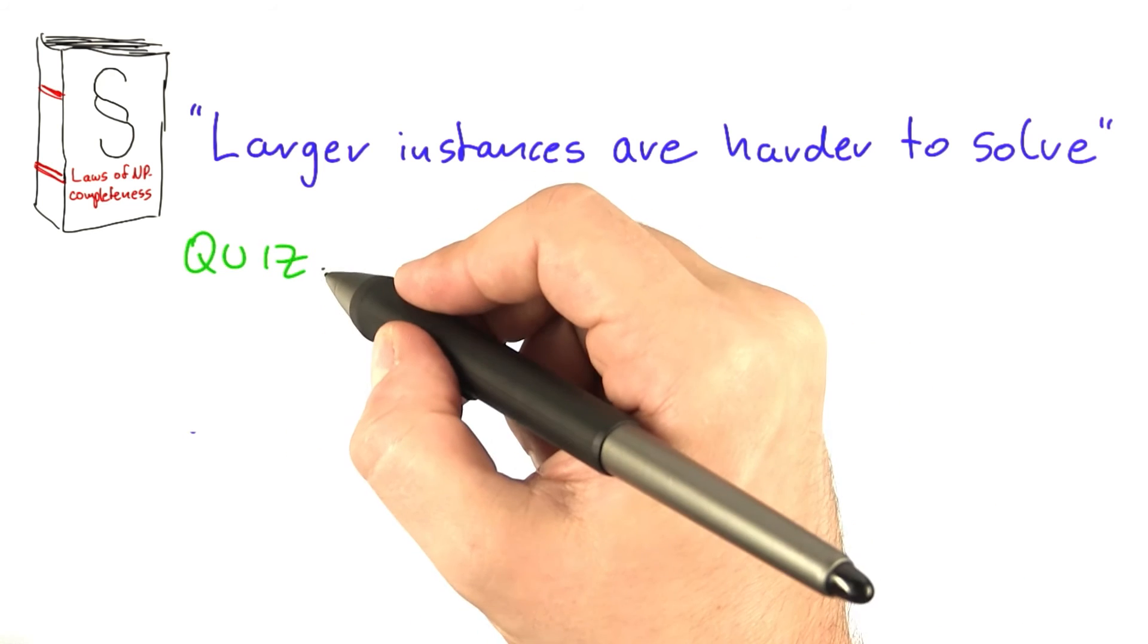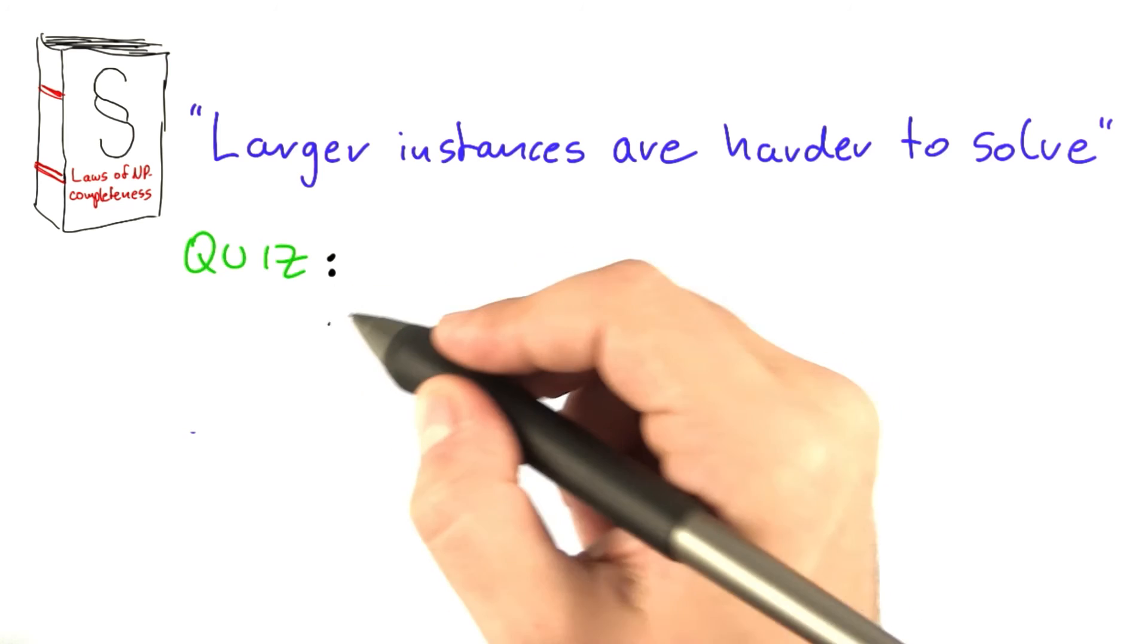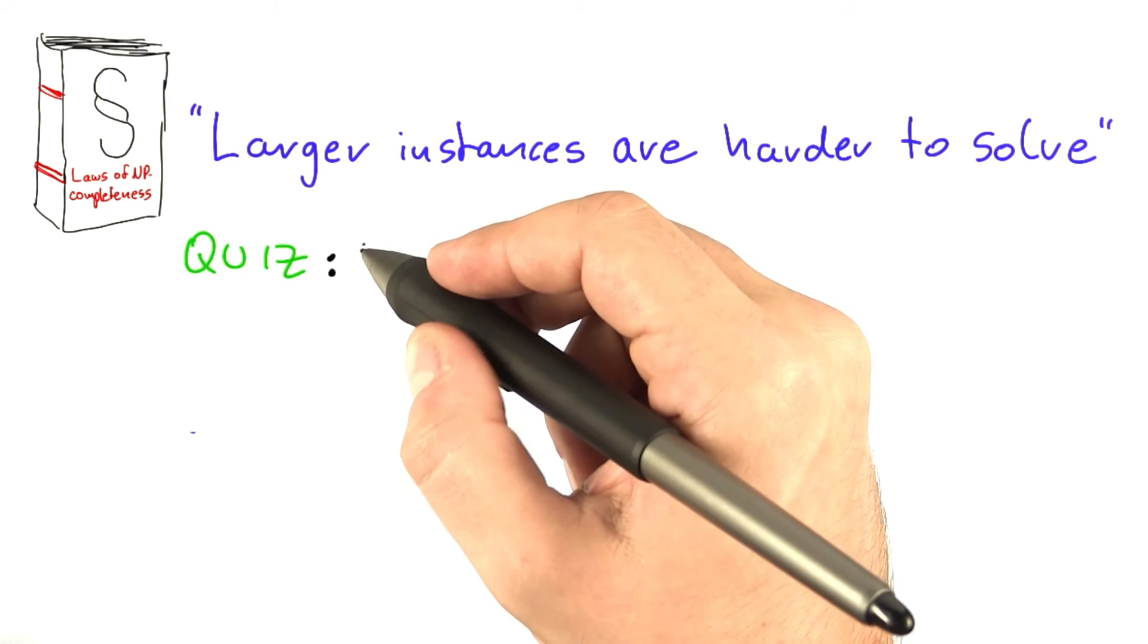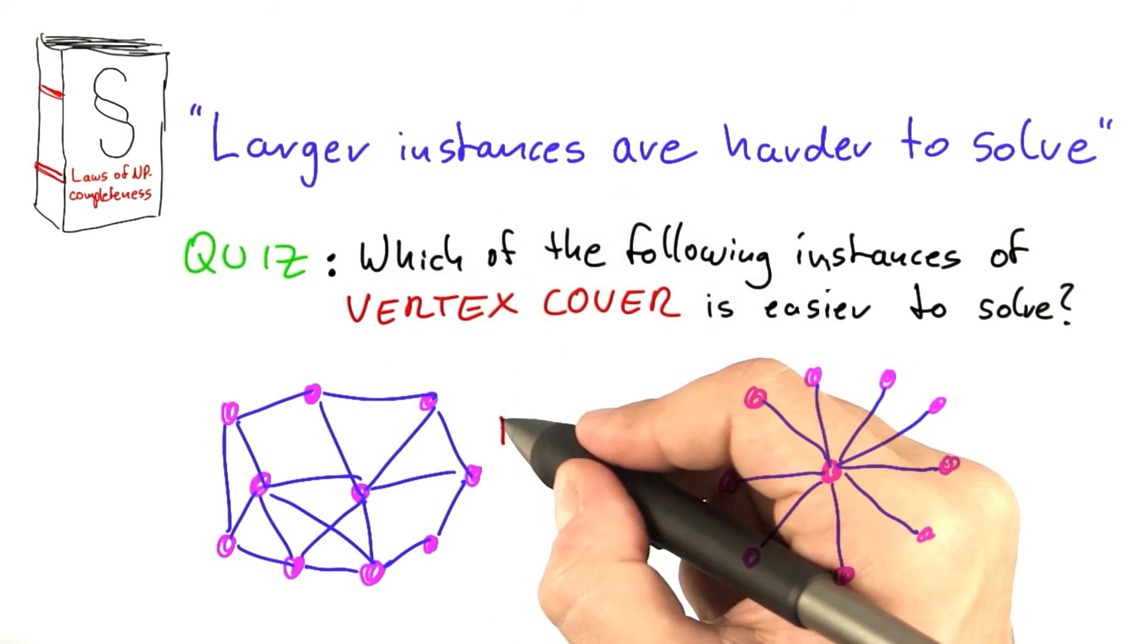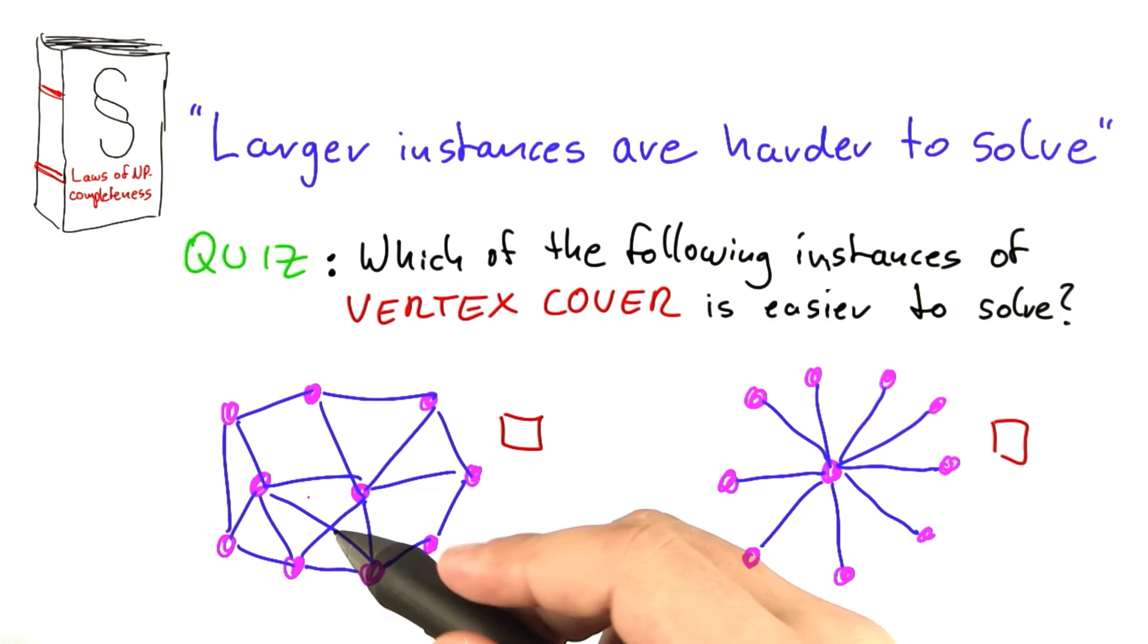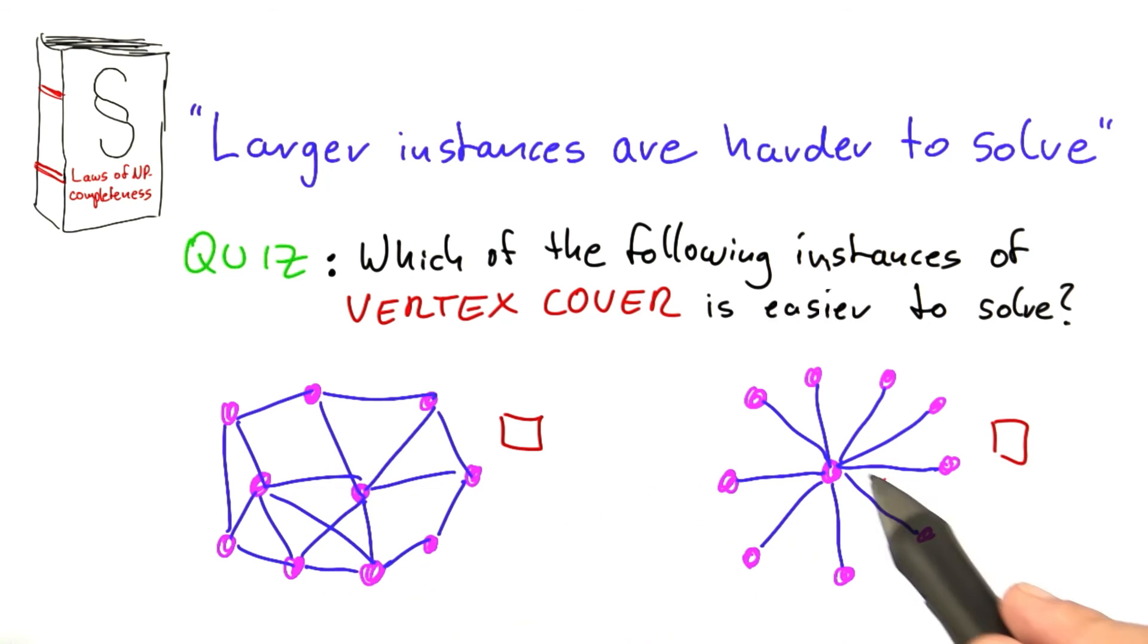Given the search trees and the preprocessing, which of the following instances of vertex cover is easier to solve? And I know this is an easy one. In case you're wondering, the number of vertices in each of these graphs here is the same.